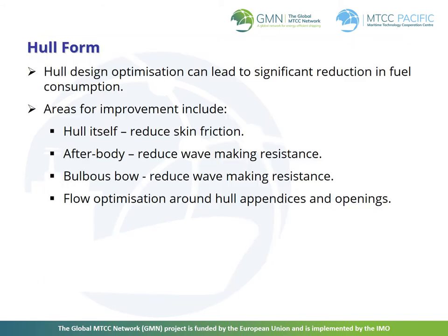During ship design and choice of machinery, the engine, ship hull form and main dimensions are optimized for operating conditions. Hull design optimization can lead to significant reduction in fuel consumption. Areas for improvement include: the hull itself to reduce skin friction; the after body to reduce wave making resistance; the bulbous bow to reduce wave making resistance; and flow optimization around the hull appendices and openings.